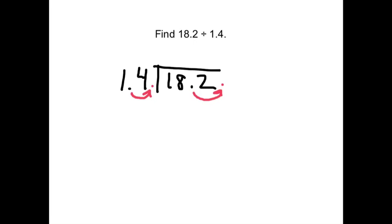Now it's a little bit easier. How many times does 14 go into 1? Zero times. How many times does 14 go into 18? It goes one time. Subtract to see what's left. This is 40. Bring down the 2. 42.